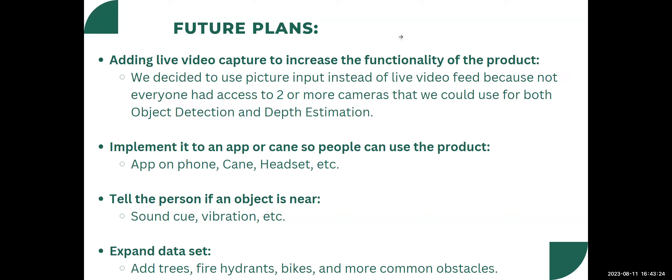And finally, the AI is not perfect, so we would also want to expand datasets on other street obstacles like trees, fire hydrants, bikes, and any typical obstacles you can think of when walking down the street.